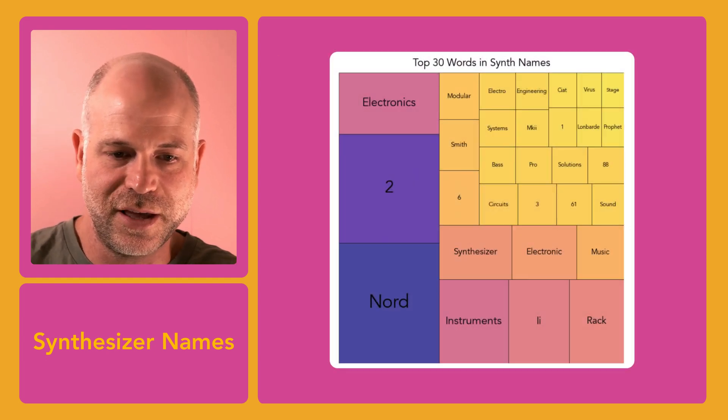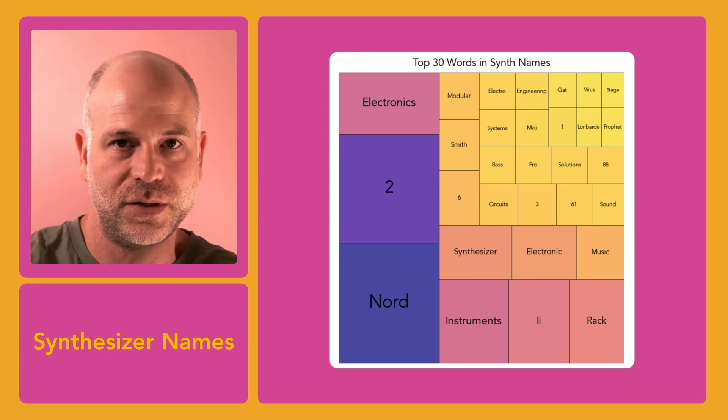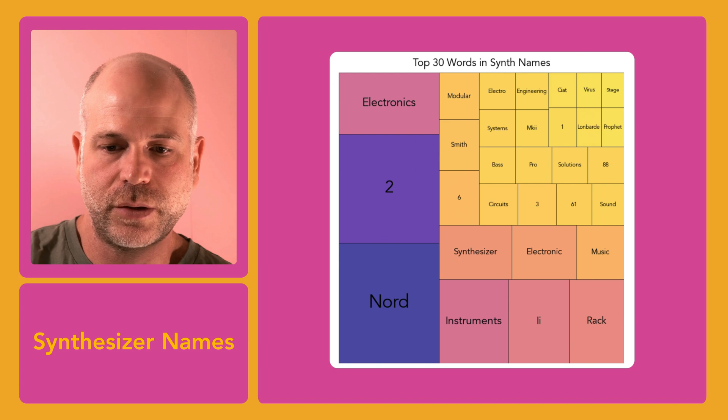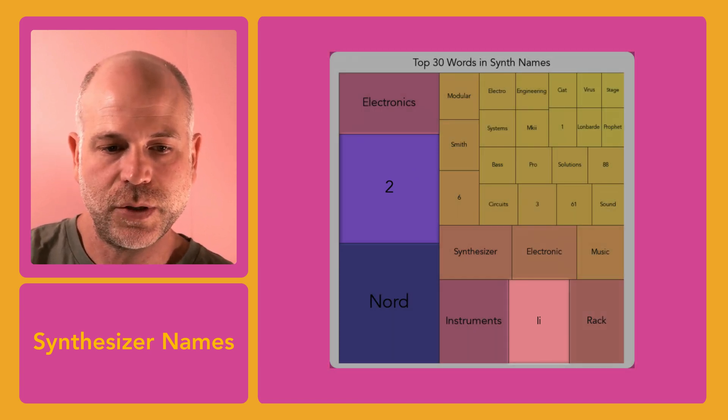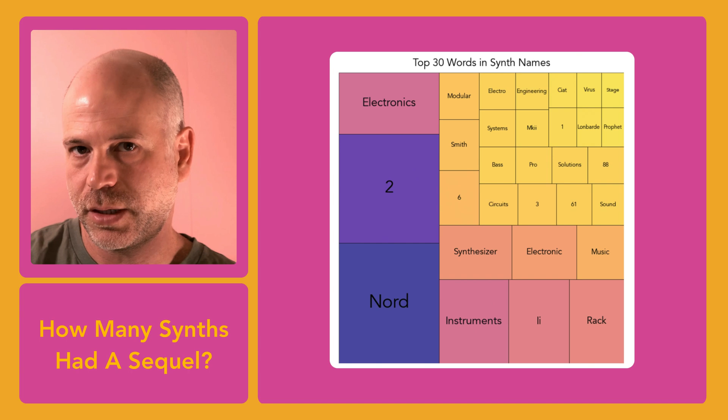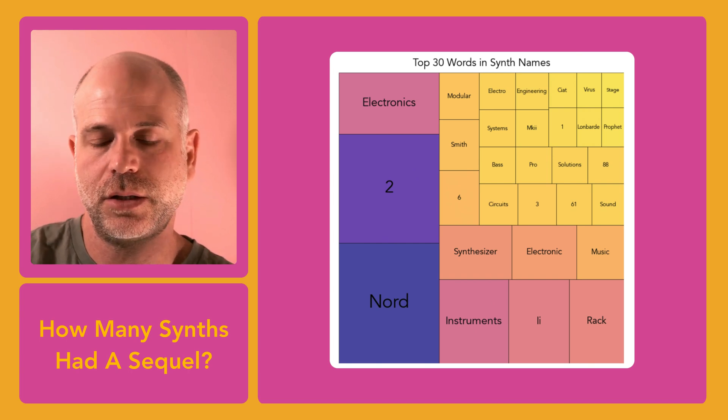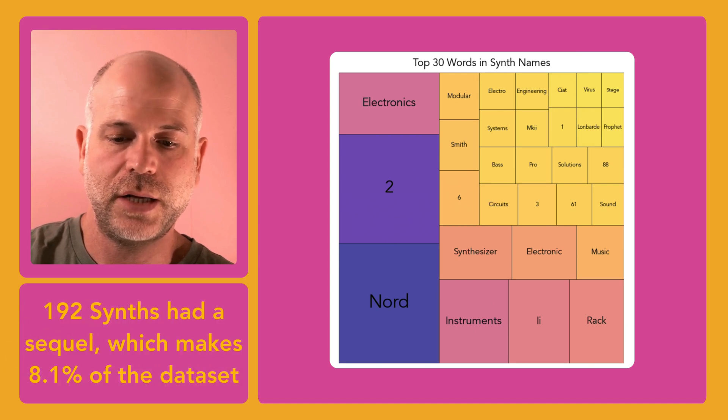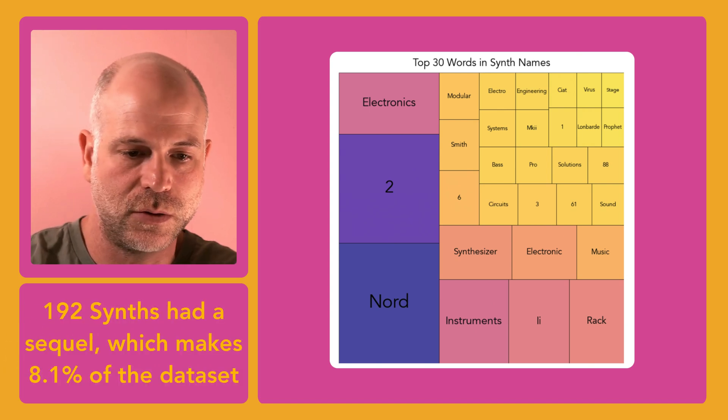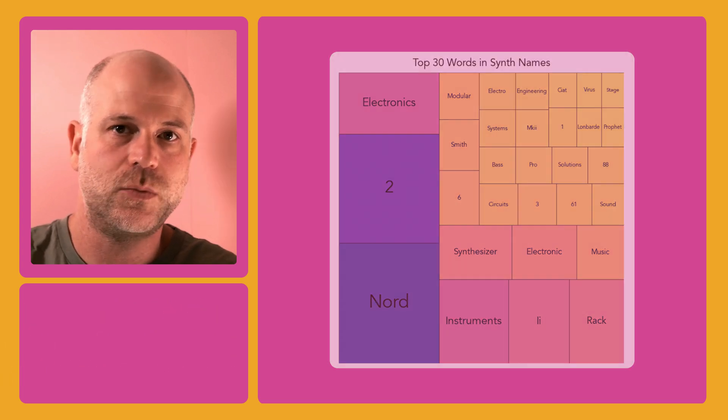If we ignore Nord, which is linked to the 63 Clavia instrument entries on the dataset, I've noticed a very frequent appearance of 2 or Roman II, which made me wonder how many synths had a sequel. So I filtered the dataset to show entries containing 2 or MK, and this returned 192 entries, which made me conclude that 8.1% of the synths in the dataset have a sequel.